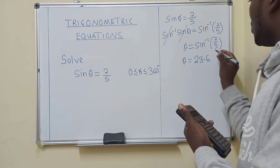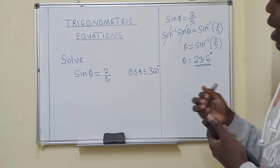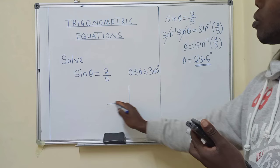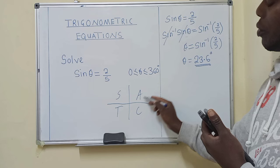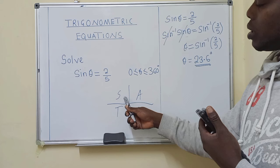Now to find the other solutions following the range that we've been given, we need to use the idea of quadrants. So here, the first quadrant is A, second is S, third is T, fourth is C. If you want, you can be using the mnemonic: All Students Take Calculus.